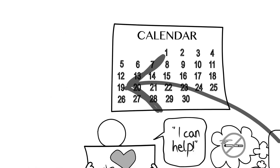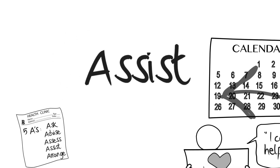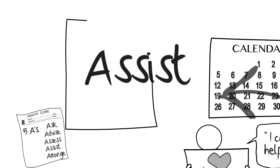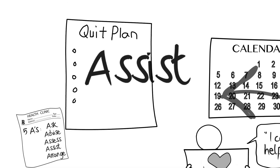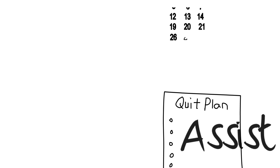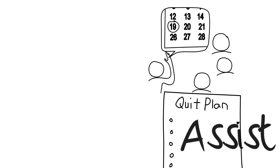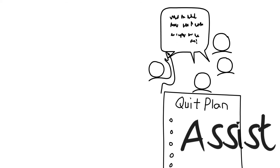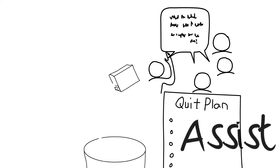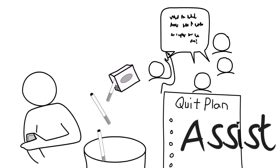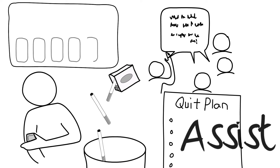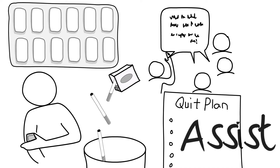The fourth A: Assist. For individuals who are willing to make a quit attempt, your role is to help them do so. This could include putting together a quit plan with them — helping them to set a quit date, asking them to tell family, friends, and coworkers about their quit date to gain support, talking through any challenges they anticipate, and asking them to remove all tobacco products from their home and workplace. You can also prescribe appropriate medication and refer them to a cessation specialist.